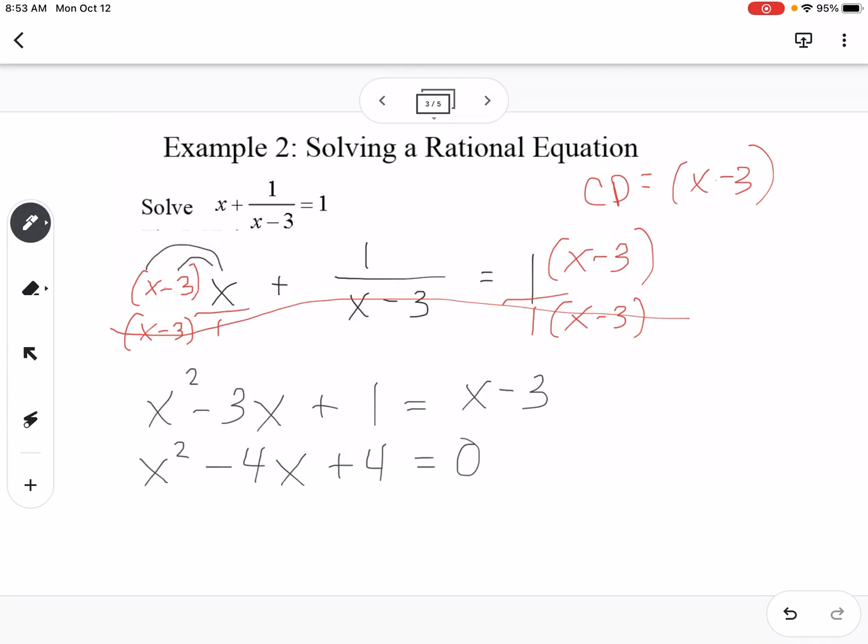So I can factor this. I say what multiplies to positive 4 and adds to negative 4? That'd be x minus 2 and x minus 2. So that means my solution is 2. Before I put a box around it and say that's my answer, I want to check to make sure it's not extraneous. So what that means is if I go back up here into my original equation, and I plug in 2 for x,